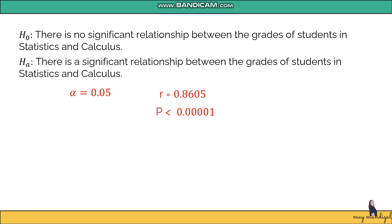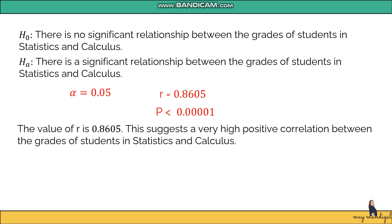The value of r is 0.8605. Looking at the correlation table, this falls under very high correlation. Since it is positive, we write: the value of r is 0.8605, which suggests a very high positive correlation between the grades of students in statistics and calculus. This means as one value goes up, the other value is likely to go up as well, and this is clearly evident in the data.